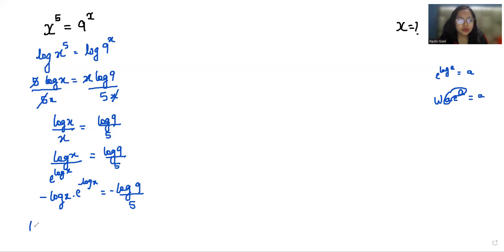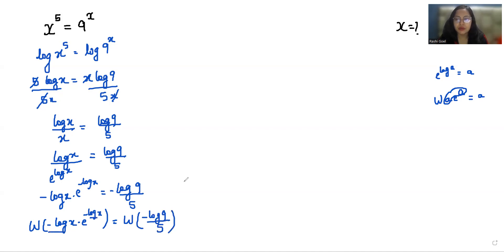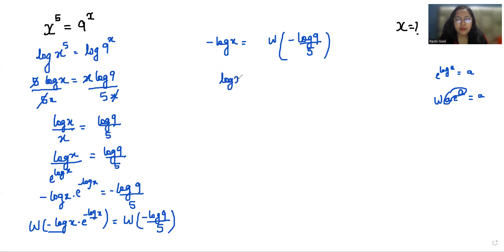So W of negative log x times e to the negative log x equals W of negative log 9 over 5. This gives us negative log x equals W of negative log 9 over 5. So log x to the power negative 1 equals W of negative log 9 over 5.